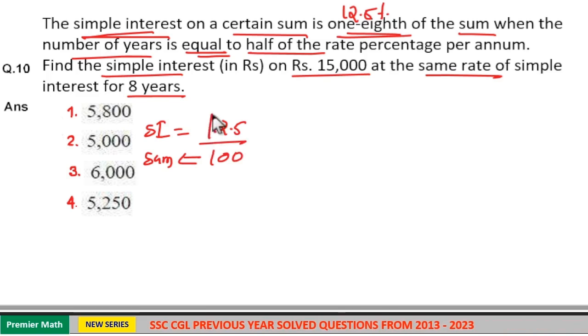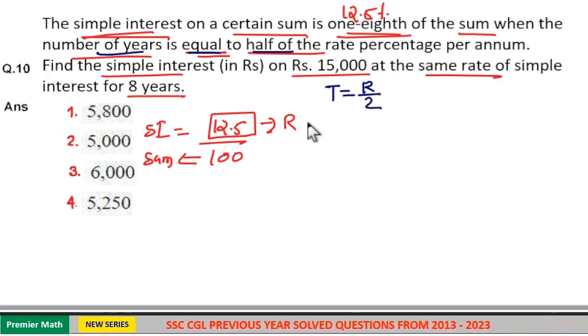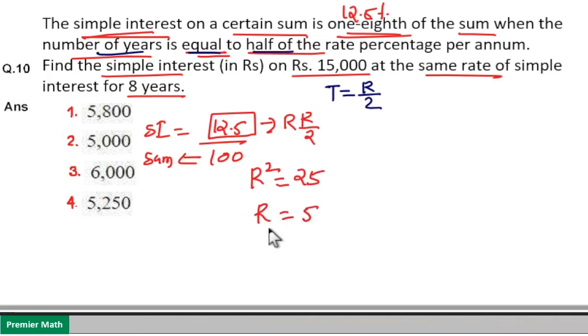So this 12.5 rupees is generated at our rate for T years. That is here, number of years is equal to half of the rate percentage. T is equal to R by 2. Then substitute T. That is T is equal to R by 2 here. So here R square by 2 is equal to 12.5 means R square is equal to 25. Then R is equal to 5.